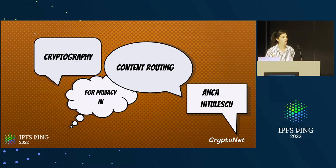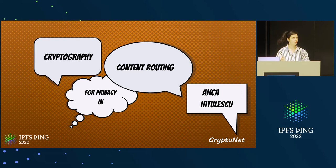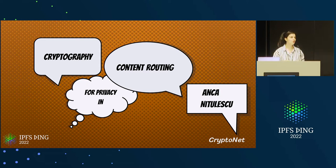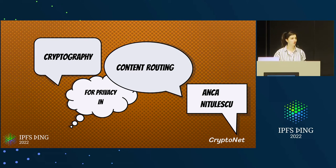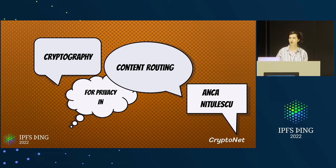I know that in the program it was written that I will talk only about private information retrieval, but I decided that's not the best solution. Maybe we can decide together. I will present a bunch of cryptographic protocols that may help with privacy in the setting of content routing. This is more of an exploratory talk — I'm not sure any of the solutions will solve the problems. I'm very happy to brainstorm, so feel free to ask questions and interrupt me or give suggestions.